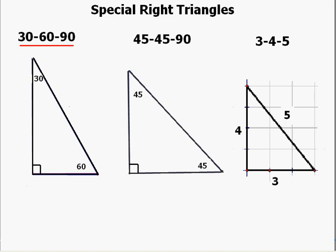As an alternative to using the Pythagorean theorem to find the missing sides of right triangles, we can use three special right triangles — the 30-60-90, the 45-45-90, and the 3-4-5 right triangle — in order to find missing lengths because of the relationships of their sides. Looking first at the 30-60-90 degree triangle.